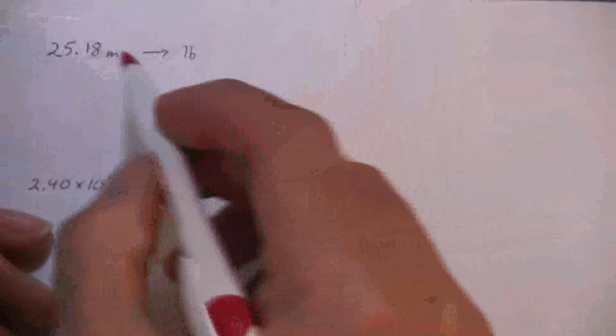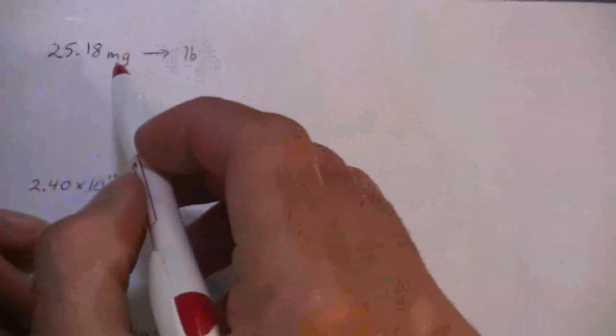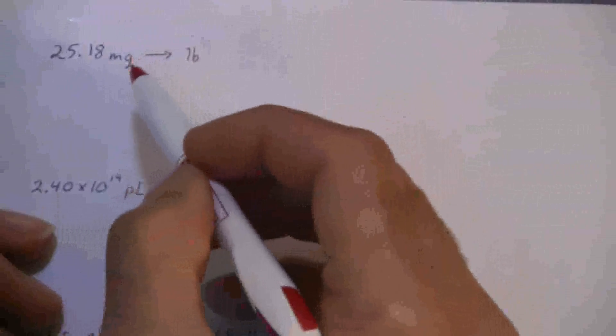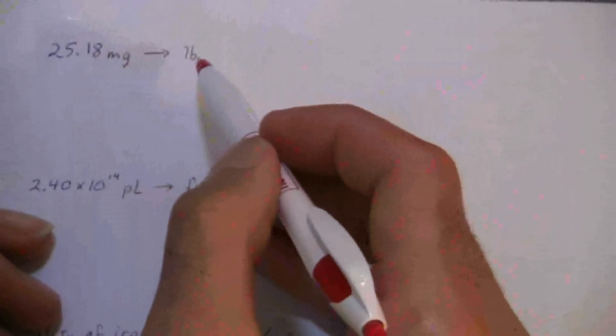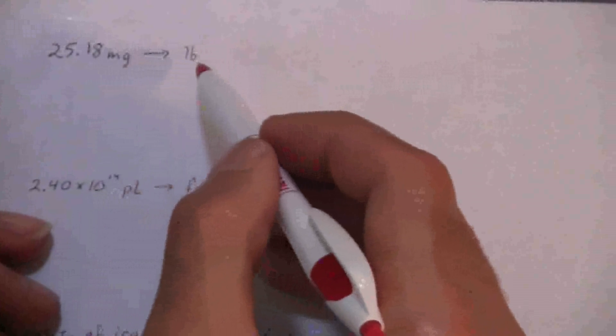All right, sometimes, a lot of times actually this will be given as a word problem and you kind of just boil it down to what I have written here, just the basics that you need. All right, so now the question is how do we get there? We need to come up with kind of like a roadmap to get from milligrams to pounds because it's really not a direct shot.